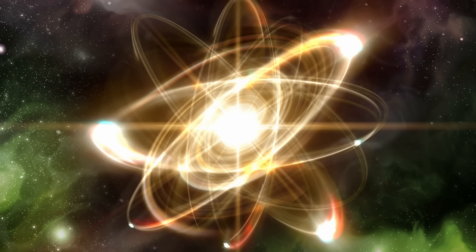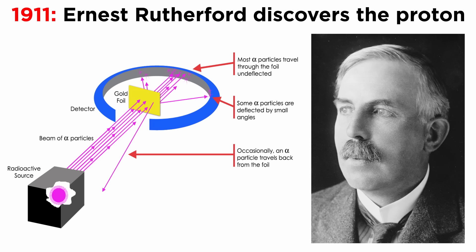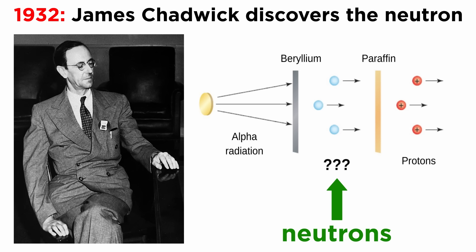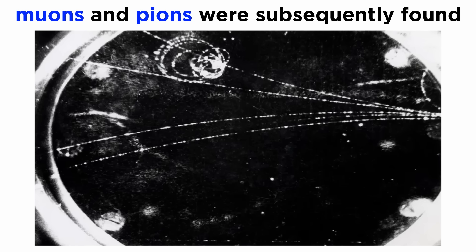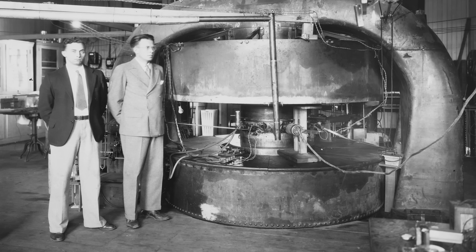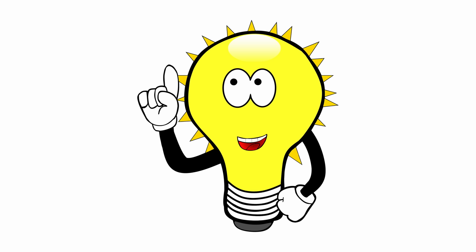The history of the standard model was kickstarted by the flurry of particle discoveries in the early 20th century. Ernest Rutherford found protons in 1911. James Chadwick found neutrons in 1932. Then Carl Anderson found the first antimatter particle, the positron, in the same year. Within the next two decades, muons and pions were found, and particle accelerators started coming online around the world. With all these new discoveries, scientists realized they needed some way to organize and explain the particles. They decided that the best way to do this was to create a model that could serve as the standard for particle physics as the field evolved.